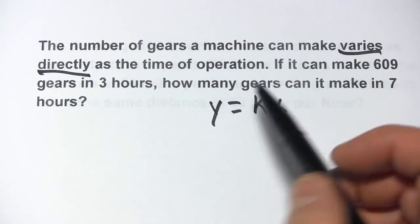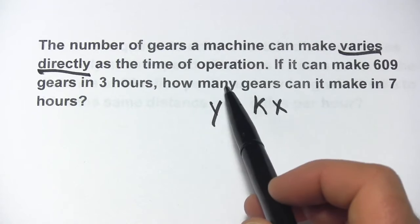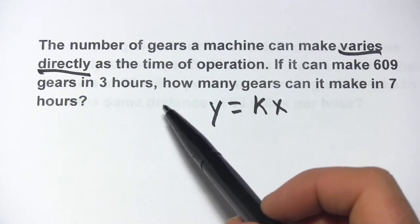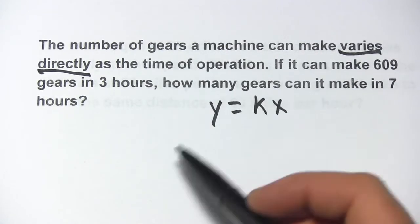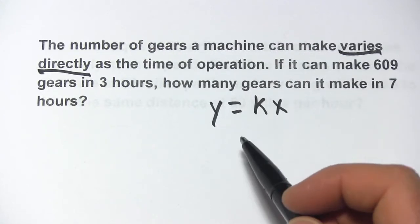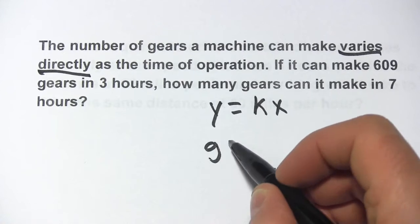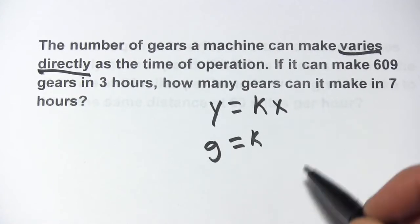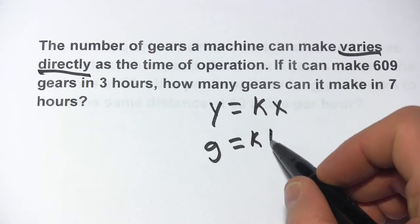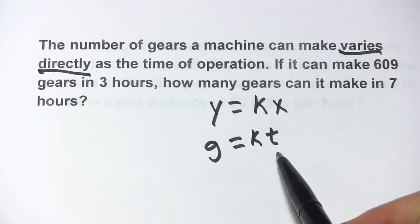It says that the number of gears varies directly with the time of the operation. So a machine is making gears, and clearly the longer it operates, the more gears it makes. So it makes sense that these two things vary directly. I'm going to call the number of gears g, k is our constant of variation, and the time I'll call t. So: g equals k times t.